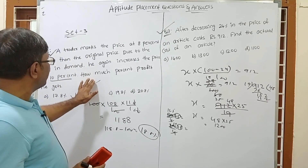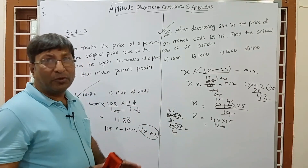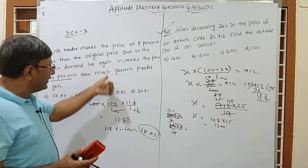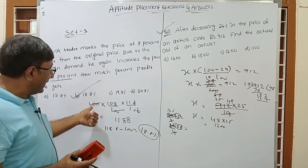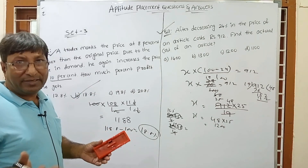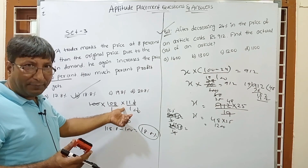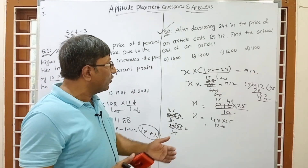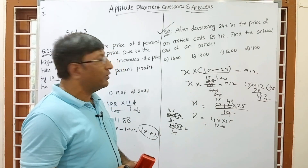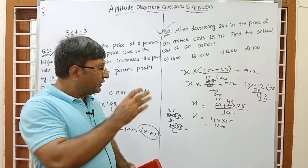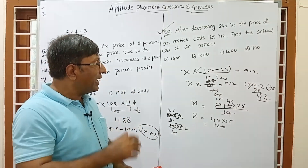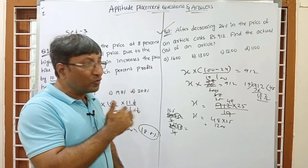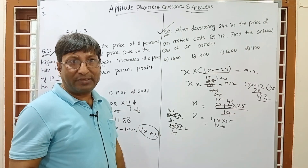So we have solved both questions. For Question 1, assume 100 and apply increases or decreases using 100 plus or 100 minus. For Question 2, set up the percentage equation and solve, using the ×25 trick where needed. If you haven't watched Set 1 and Set 2, please watch those as well — both contain important questions. Thank you!